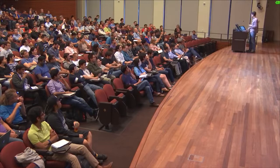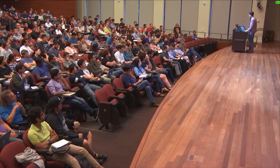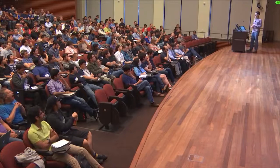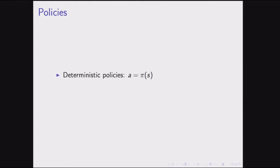The goal is simply to maximize the expectation of the total reward per episode. The policy is just the function the agent uses to choose its actions. We have deterministic policies — the action is just some function of the state — and stochastic policies where the policy is a conditional probability distribution.